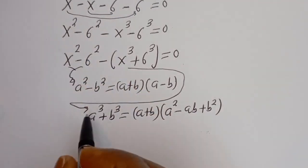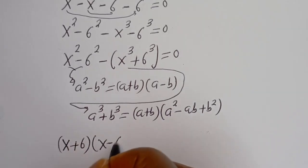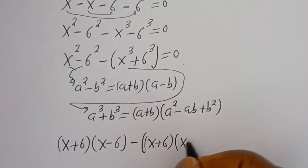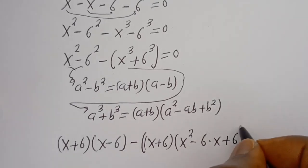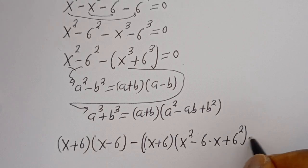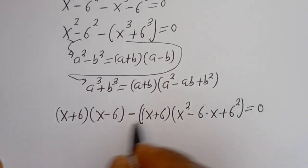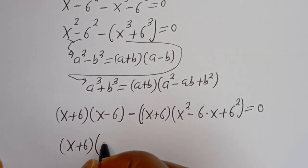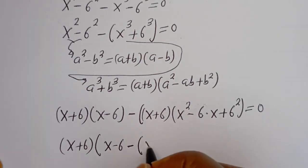Applying these identities, the difference of squares gives (s+6)(s-6), and the sum of cubes term gives (s+6)(s squared minus 6s plus 36), all equal to 0. We can see that (s+6) is a common factor. Dividing through by the common factor, we extract (s-6) from the first term and (s squared minus 6s plus 36) from the second.